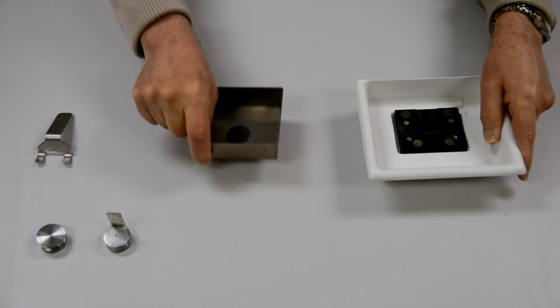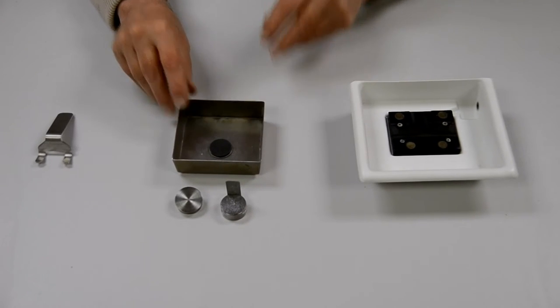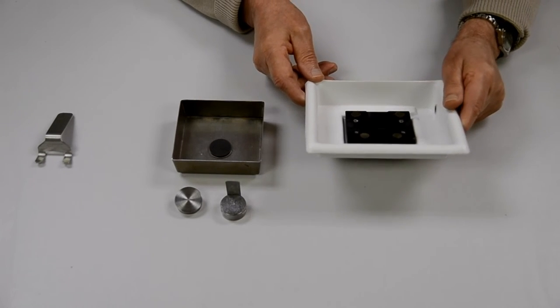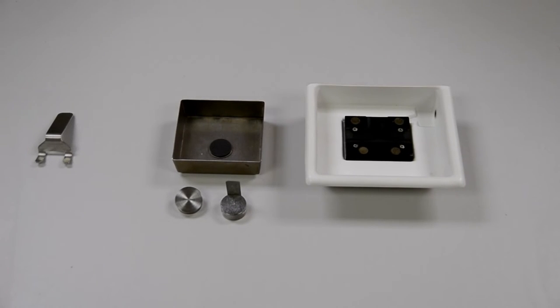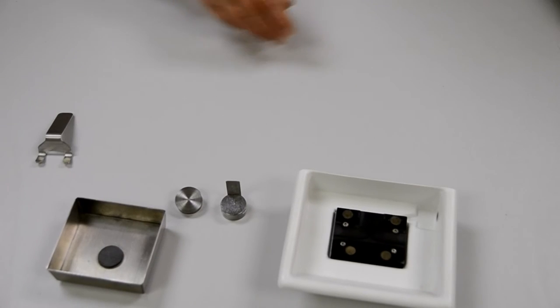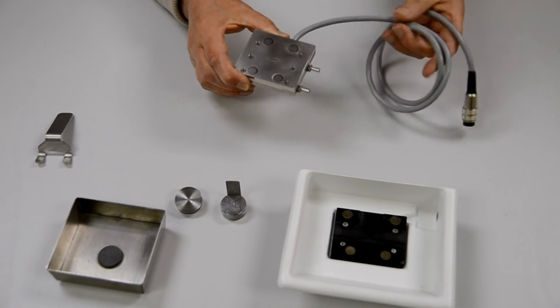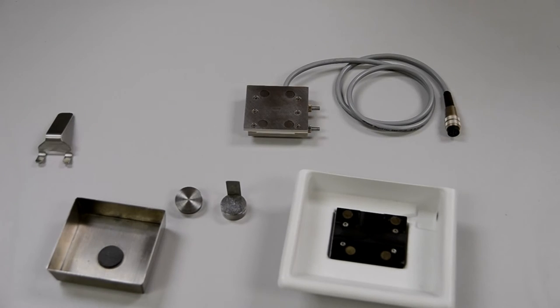The inner bath and the specimen mounts can be autoclaved by normal means up to 120 degrees Celsius. The ice surround outer bath contains thermoplastic materials and cannot be autoclaved. Replacement baths and specimen mounts are available as spares. Optionally, the standard tissue bath may be replaced by a cold tissue bath with temperature control. This will help to keep your slices viable for longer periods. The 7610A temperature controlled tissue bath is dealt with in greater detail later in this video in the optional extras chapter.